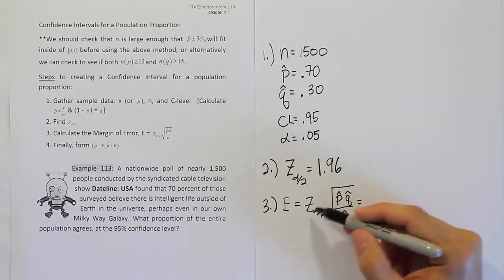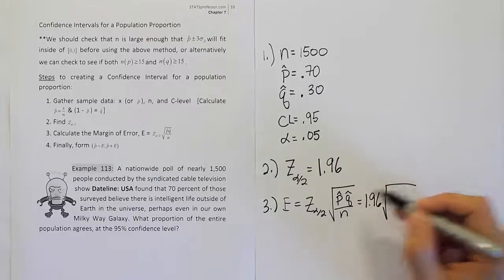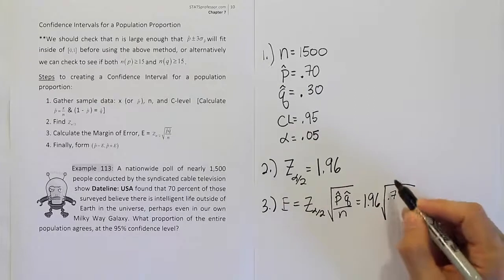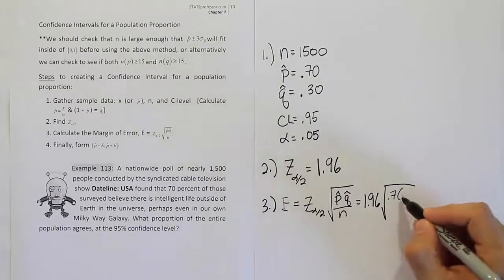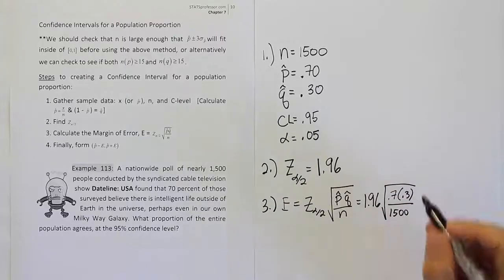Alright, from there, we're going to fill in what we know. 1.96, the square root of, we have all these quantities. 0.7 for p-hat times 0.3 for q-hat divided by n, which is 1,500. Alright, so let's take our calculator out and form that calculation.